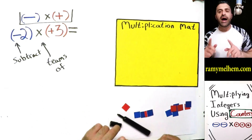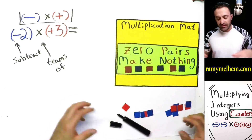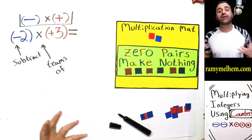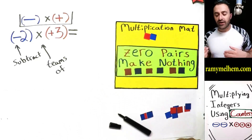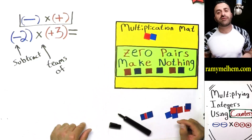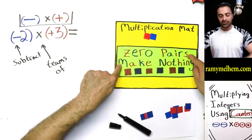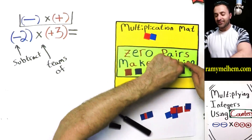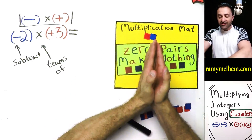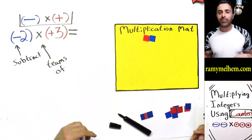Remember back to the addition of integers using tiles — we used a concept called zero pairs. If you put a red player with a blue player, they're worth nothing. This is positive one, this is negative one — together they cancel out and make zero. So anytime you need to subtract players, just put zero pairs down. I've color coded them: these cancel out to make zero, these cancel out to make zero. The whole sign is worth zero.